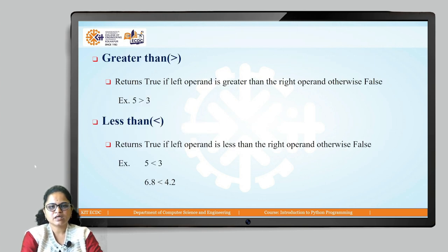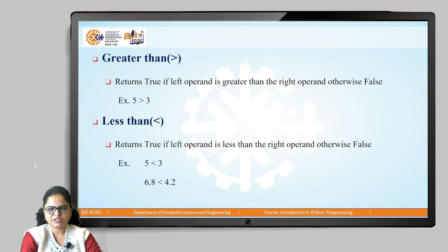Greater than is used when you want to check if the first operand is greater than the second operand or not. If it is, it returns true, otherwise it returns false. In this example, 5 greater than 3 — since 5 is the greater number, it results in true.